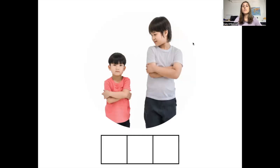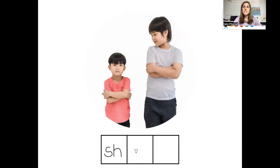Our next word is short. You can see that one boy is shorter than the other boy. How many sounds do you hear in the word short? There are three sounds in the word short. The first sound is SH — we need a digraph to spell the SH sound: S-H. The next sound is 'or,' spelled O-R. And the last sound is T — the letter T. This is how you spell short.